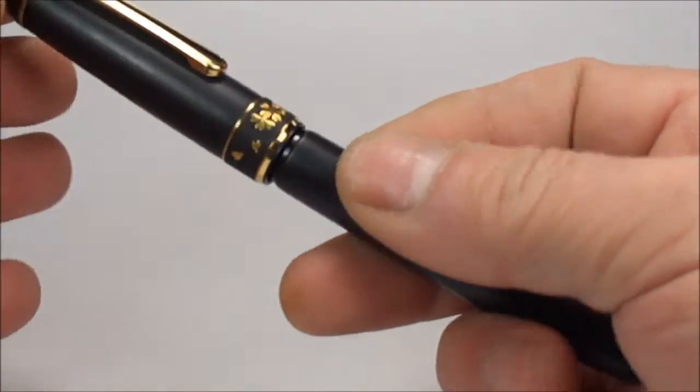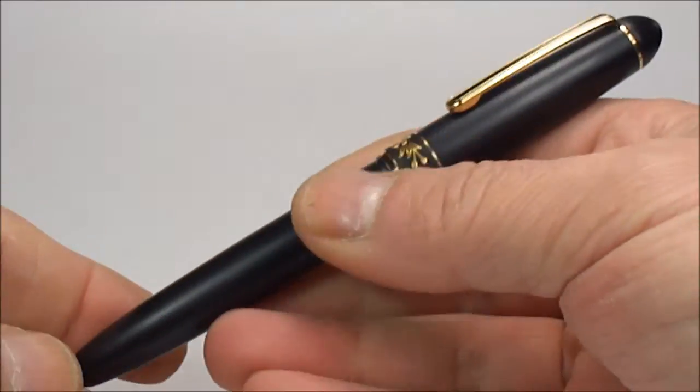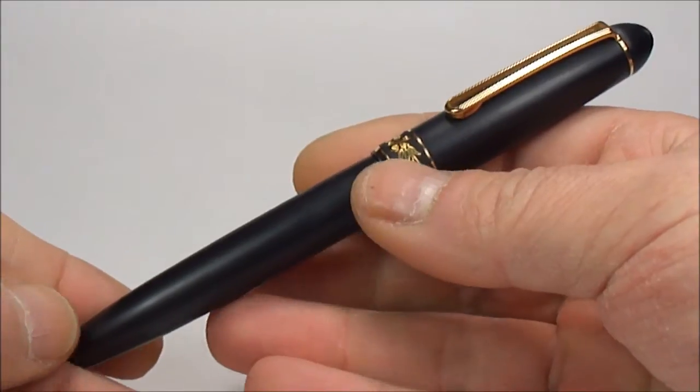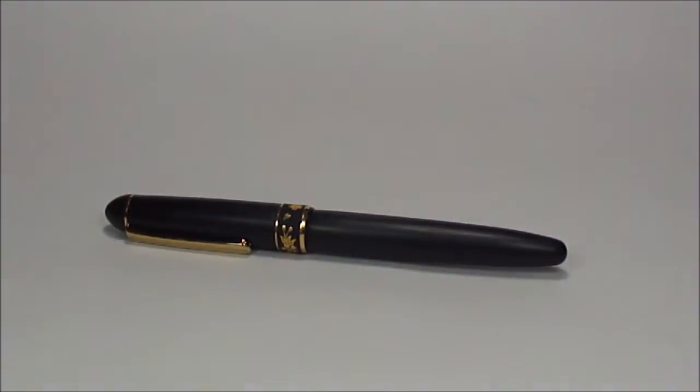So there we have it, and again, if we just click the cap down there, you go, you can hear that it snaps with a lovely satisfying snap. So there we have it, that's the Platinum 3776 fountain pen, made in Japan, absolutely beautiful.